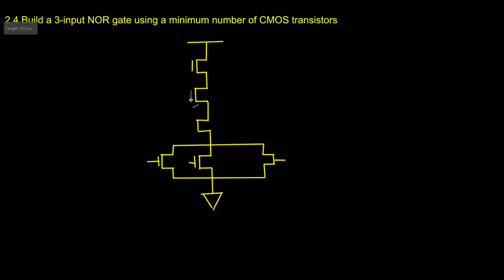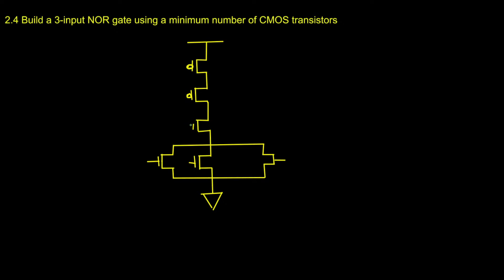Here we are going to have 3 inputs — you can name them A, B, C or X, Y, Z, it's up to you. For the PMOS we will have a circle at the gate end. Let's call them X, Y, and Z. As you can see we have 3 PMOS in series and 3 NMOS in parallel. The output is labeled V-out or F. This is our VDD and this is our ground.